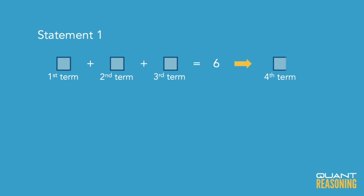So if the sum of the first three terms is six, that means that the fourth term is six, because the fourth term would be equal to the sum of all of the preceding terms.